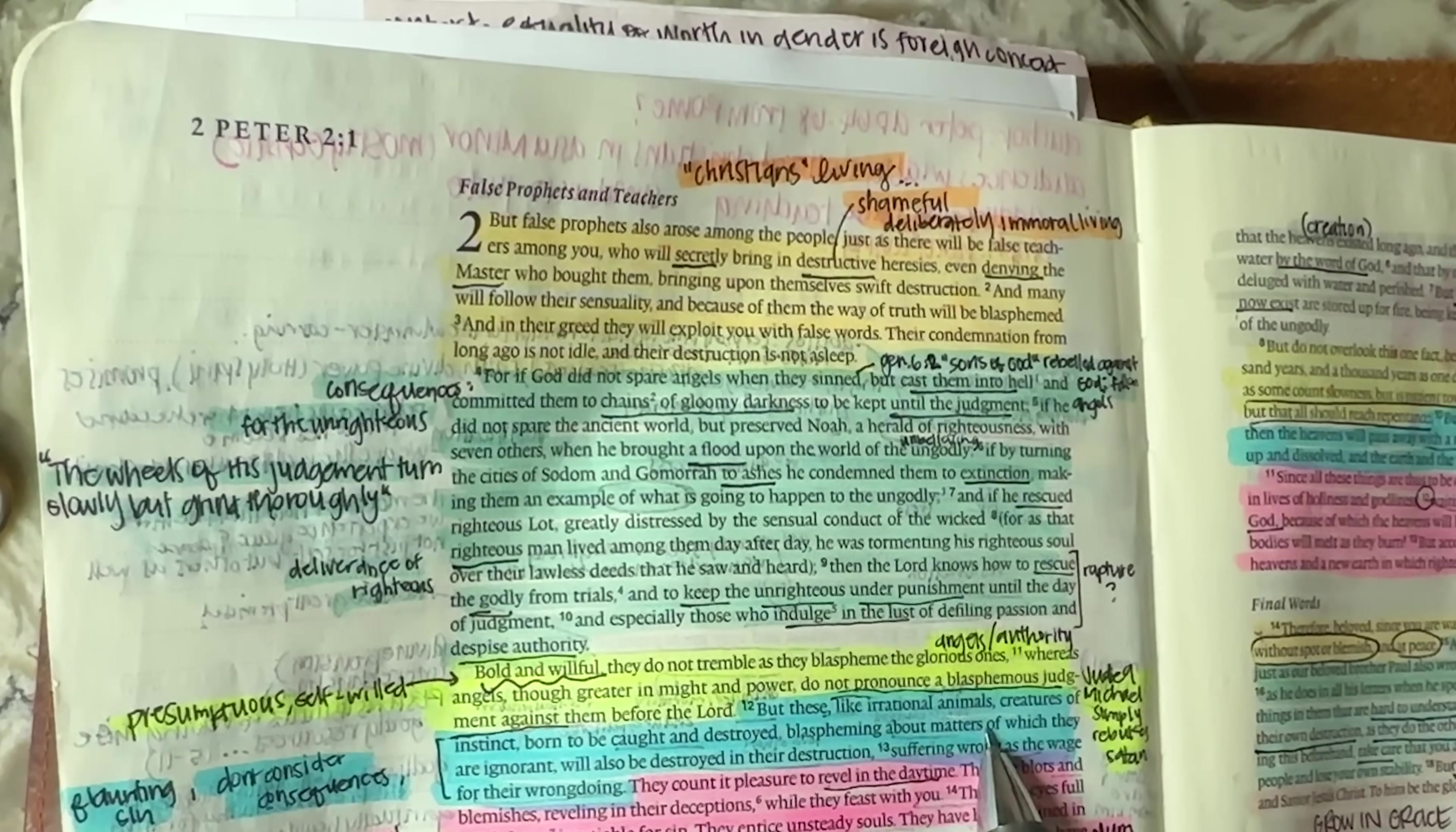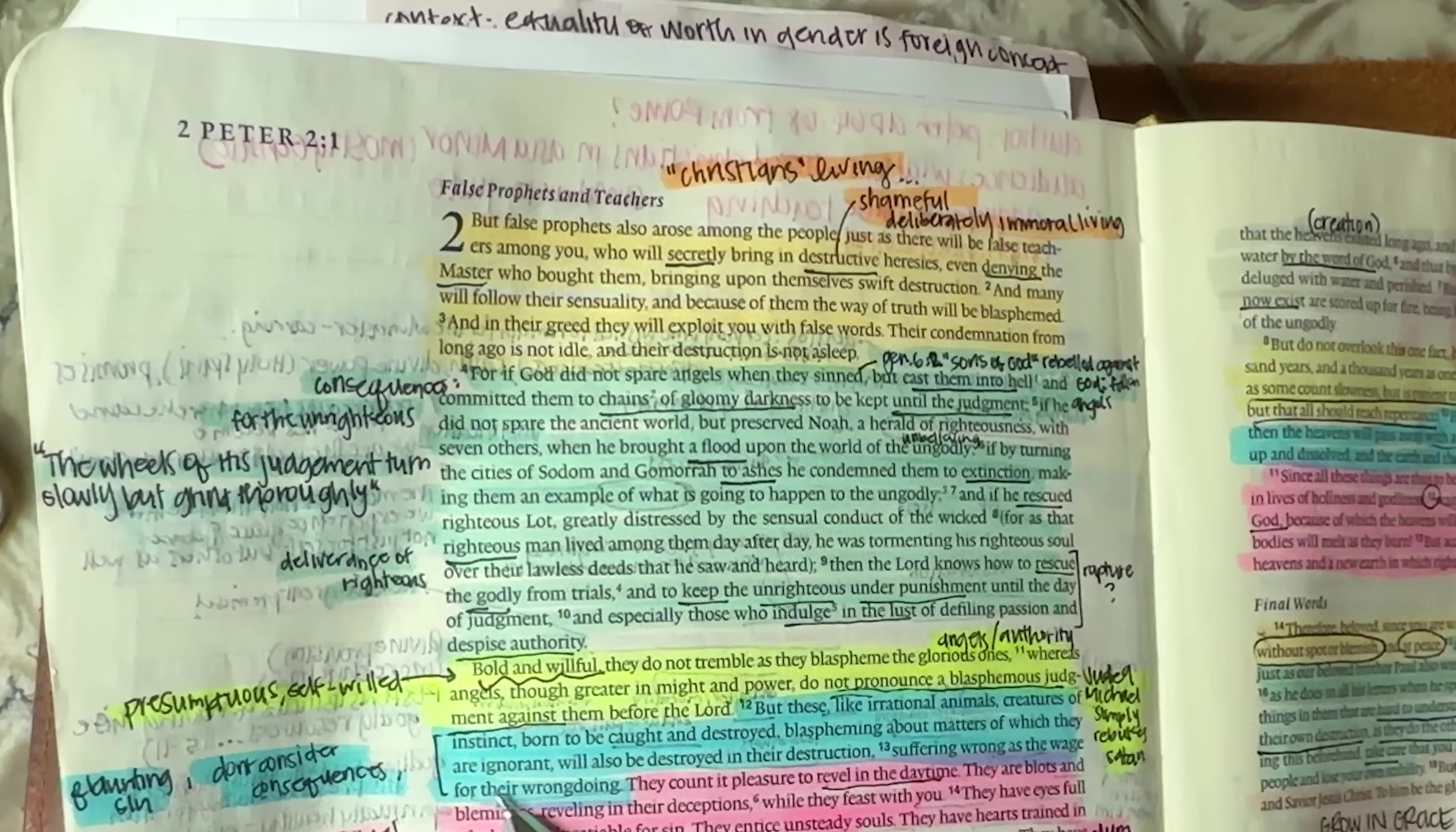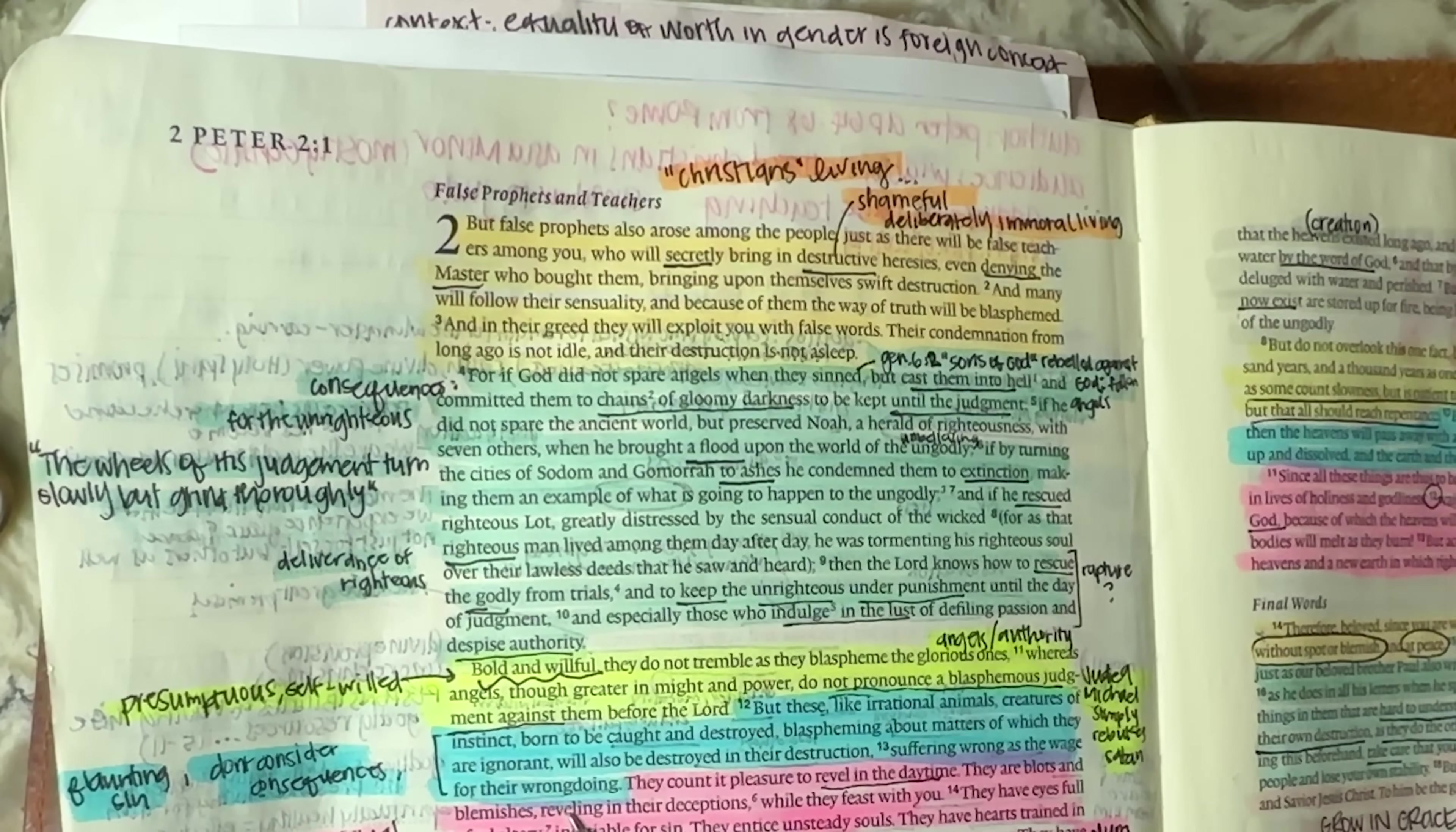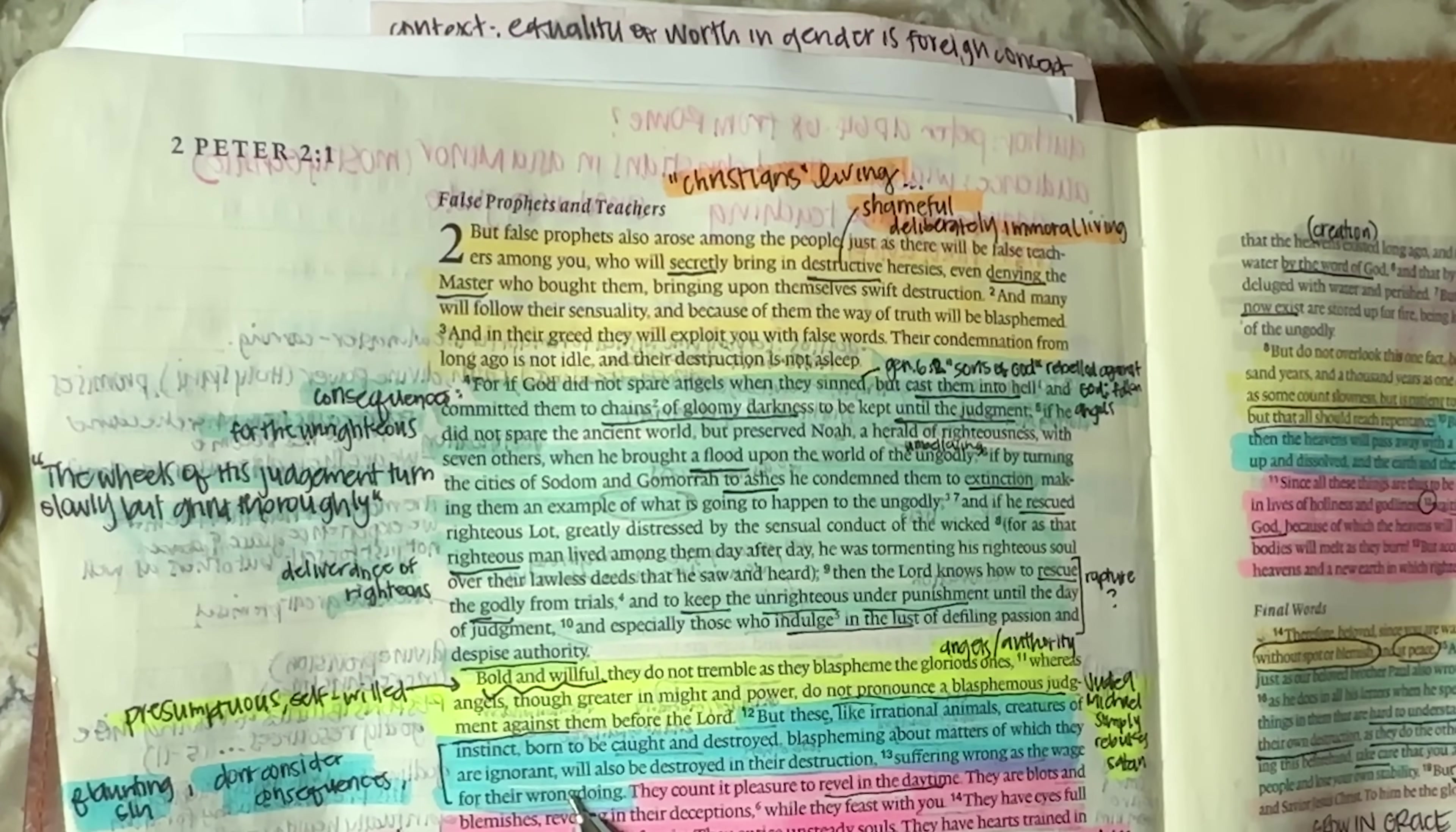But these like irrational animals, creatures of instinct born to be caught and destroyed, blaspheming about matters of which they are ignorant, will also be destroyed in their destruction, suffering wrong as the wage for their wrongdoing. So these are people who are living openly, flaunting their sin. They don't even consider the consequences.